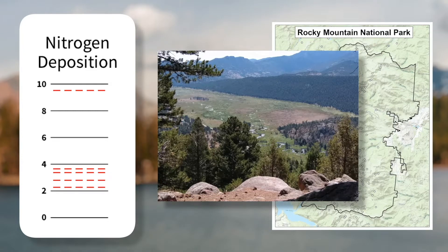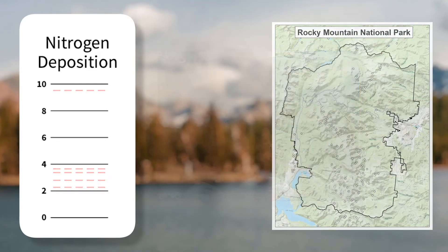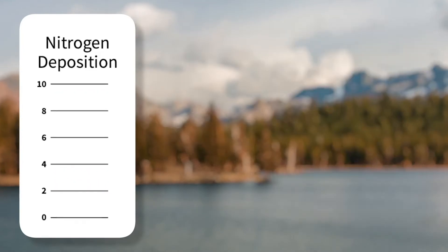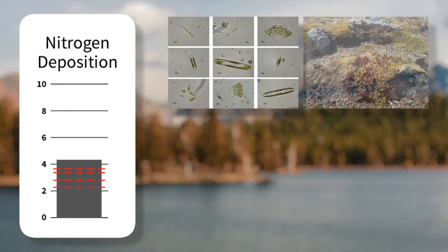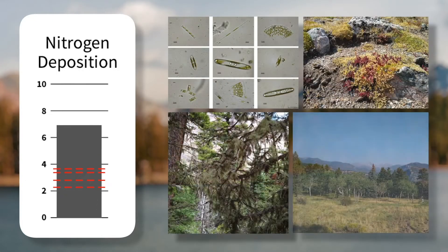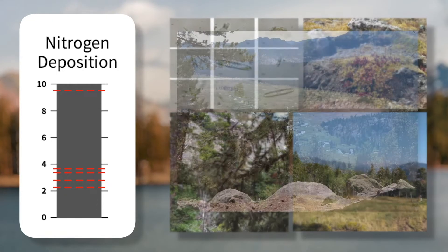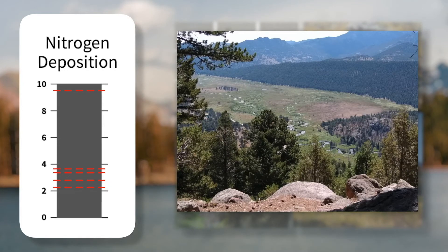When considered together, these critical loads show that as deposition increases, nitrogen affects a greater proportion of the ecosystem, including organisms and non-living components like soil and water.